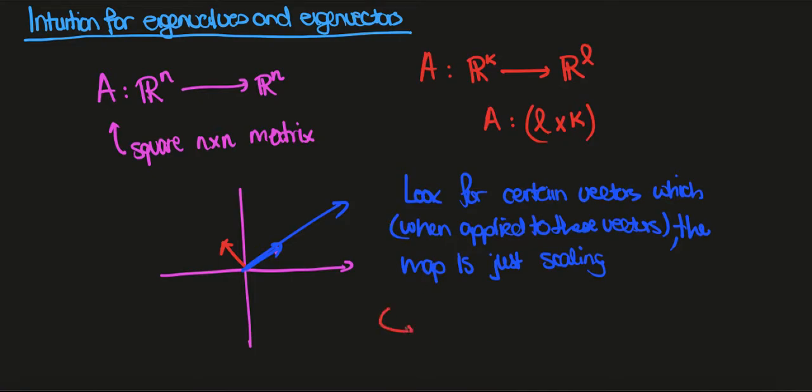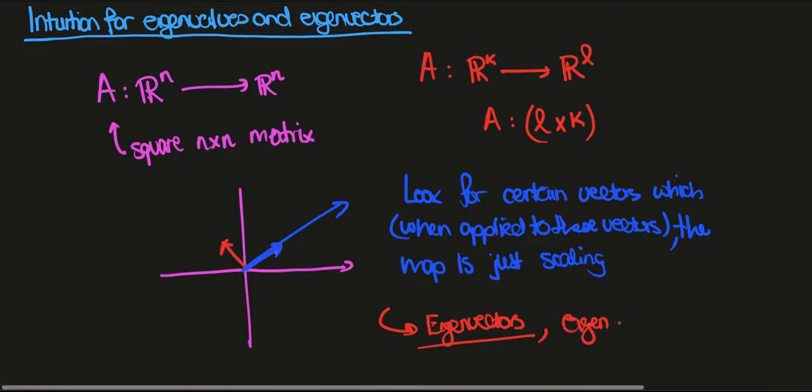Such vectors are going to be called eigenvectors, and the extent to which they're scaled, the scaling factor, is called an eigenvalue.